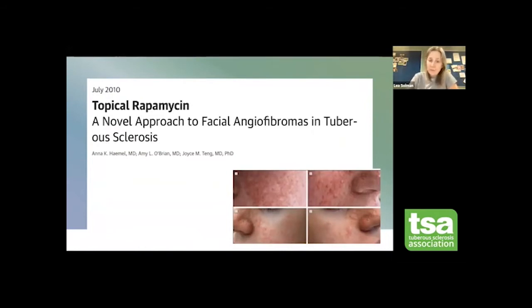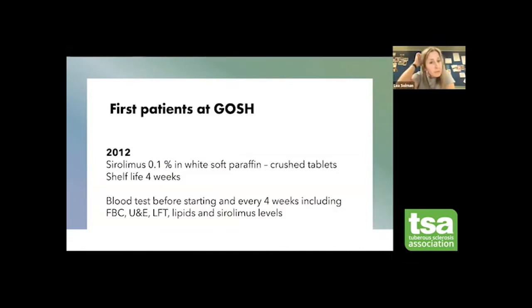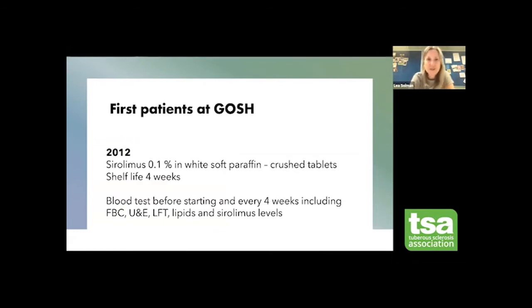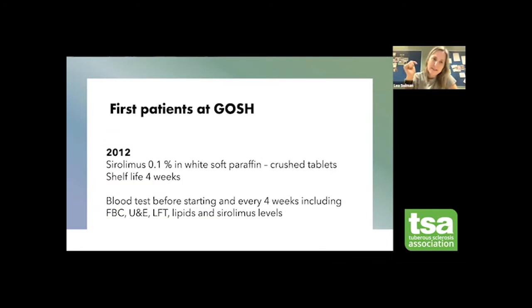This is how it all started. In July 2010 we had the first report of a novel approach to facial angiofibromas in tuberous sclerosis, and you can see how well patients responded. That's how we started at GOSH. In 2012 we started treating our first patient with 0.1% sirolimus in white soft paraffin. We would take sirolimus tablets, crush them, put them in the ointment, and the shelf life was four weeks — which was very difficult for patients outside London.